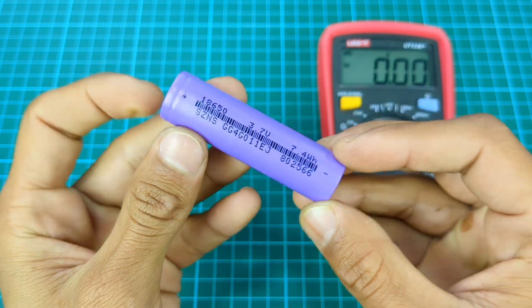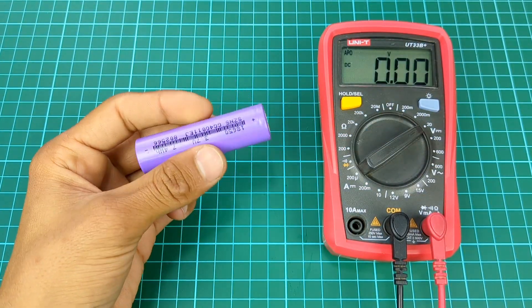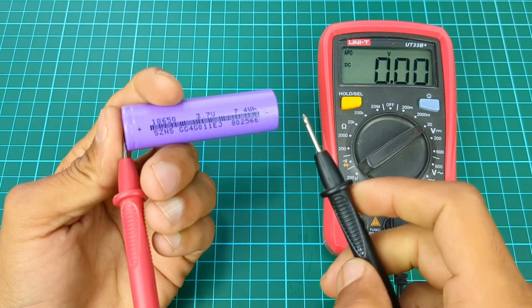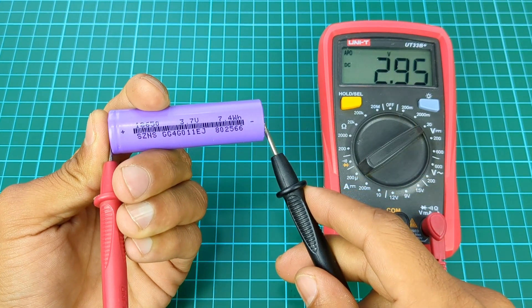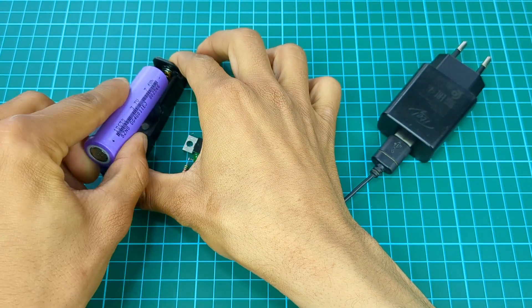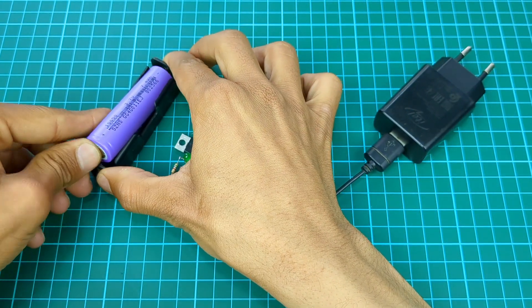Here is 18650 lithium battery as you can see. The battery's voltage is very low, only 2.9 volts. Now I'm going to connect battery.